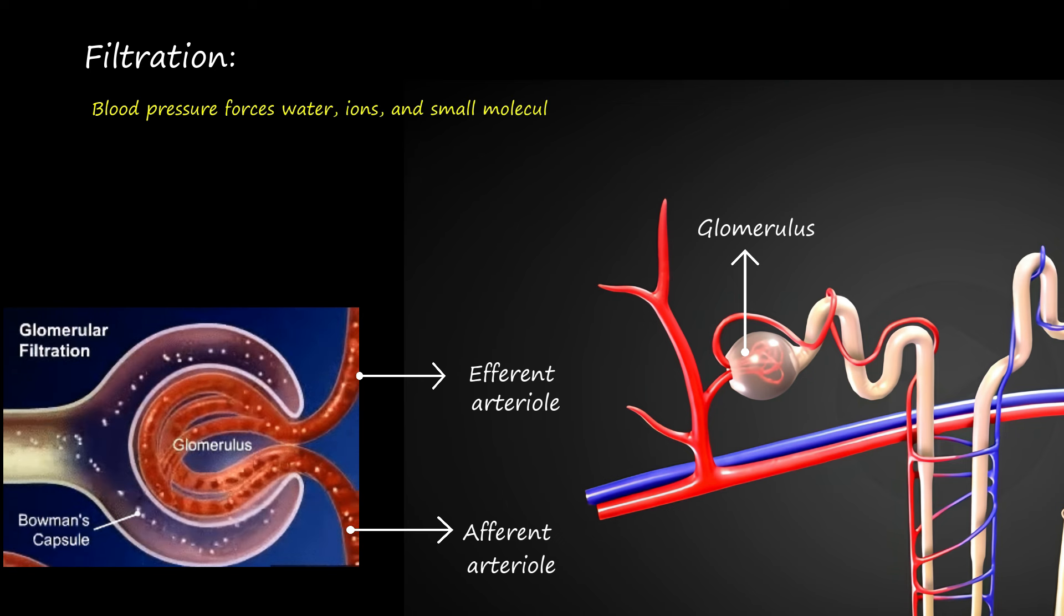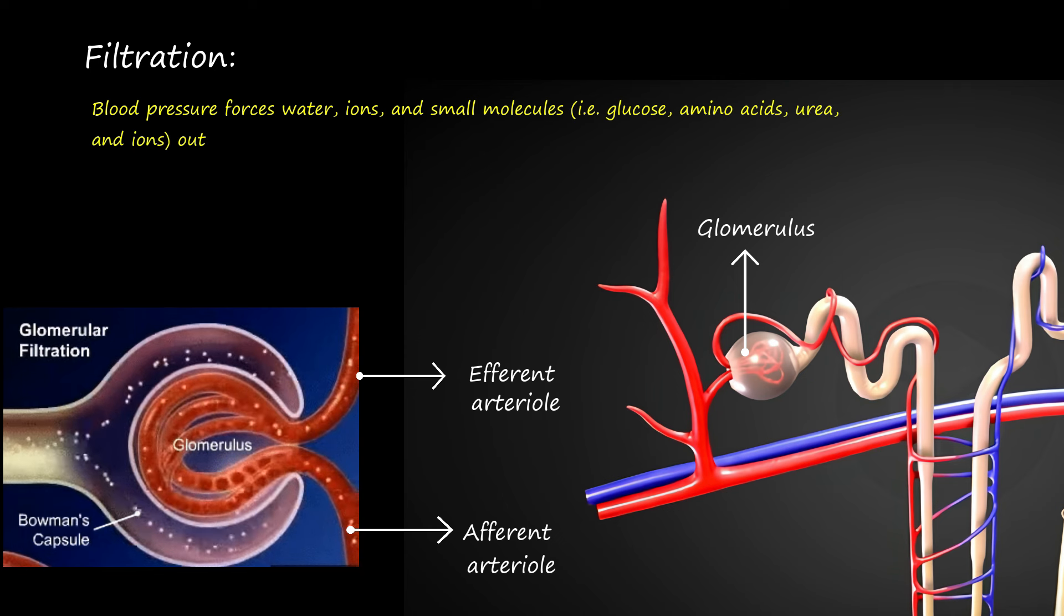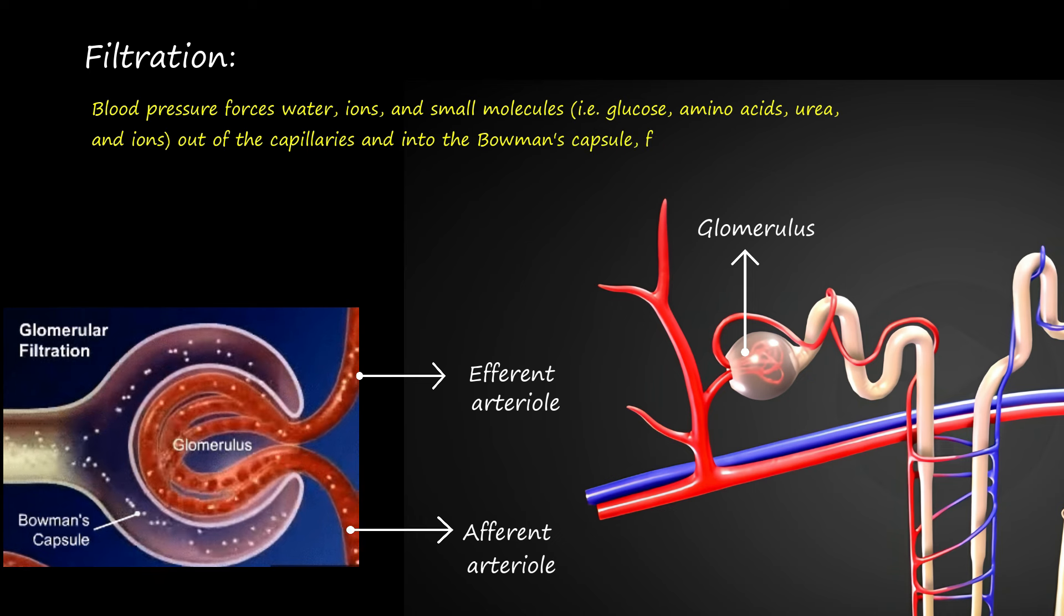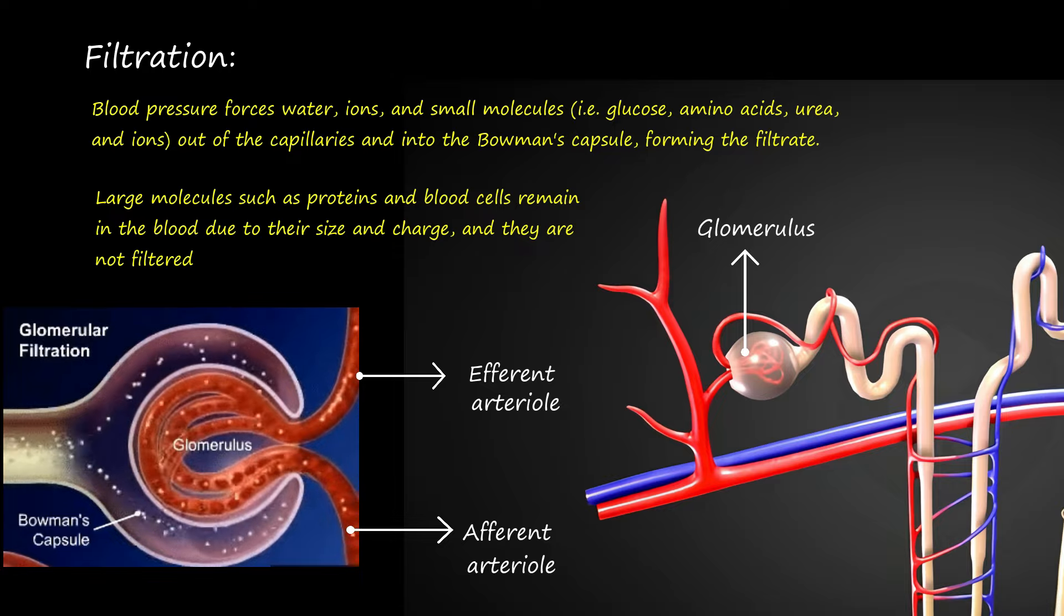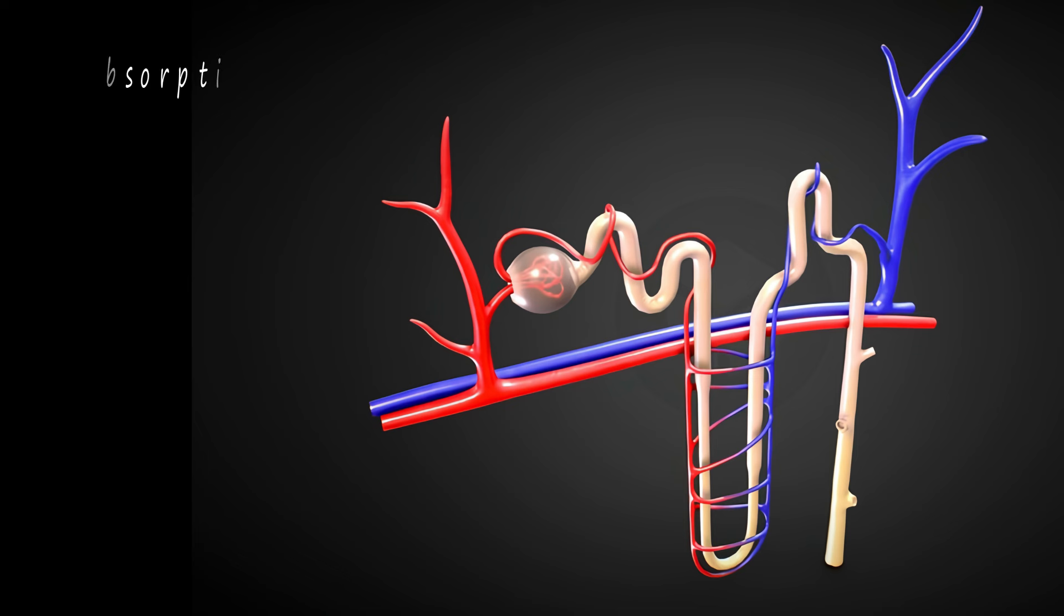Blood pressure forces water, ions, and small molecules such as glucose, amino acids, urea, and ions out of the capillaries and into the Bowman's capsule, forming the filtrate. Large molecules such as proteins and blood cells remain in the blood due to their size and charge, and they are not filtered into the Bowman's capsule. Next is reabsorption.